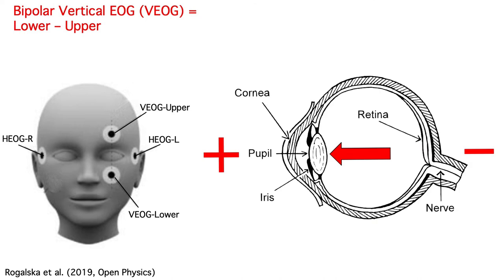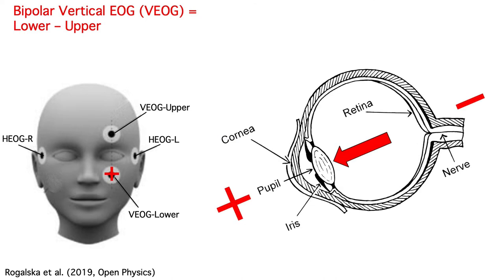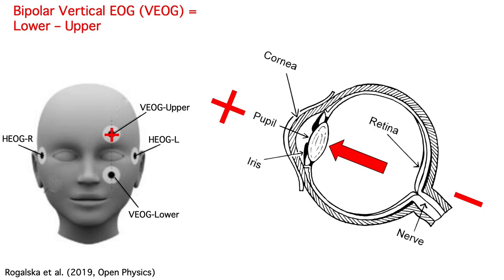The bipolar VEOG also lets us look at upward and downward eye movements. If the eyes rotate downward, the voltage becomes positive below the eyes. And if they rotate upward, the voltage becomes positive above the eyes.